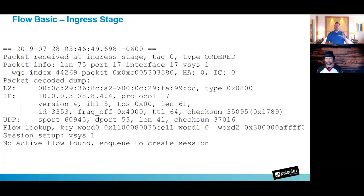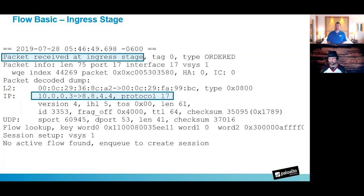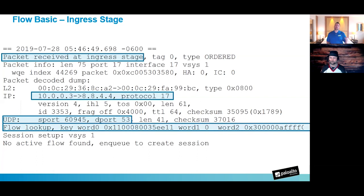I've pasted the output into Notepad++ for analysis. You can see traffic arriving at the ingress stage — there's no tag value because this is the first time this traffic has been seen. You can see it's from my 10.0.0.3 address to the Google DNS server. Protocol 17 confirms this is UDP traffic. You can also see source port, destination port, packet length, checksum, and the flow lookup key the firewall creates — a hash of source IP, source port, destination IP, destination port, and ingress zone.